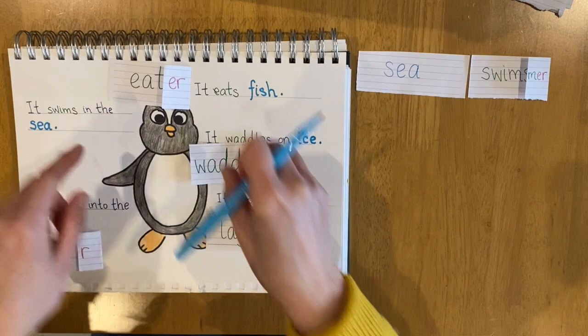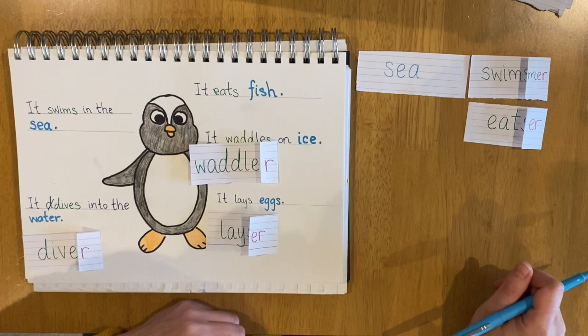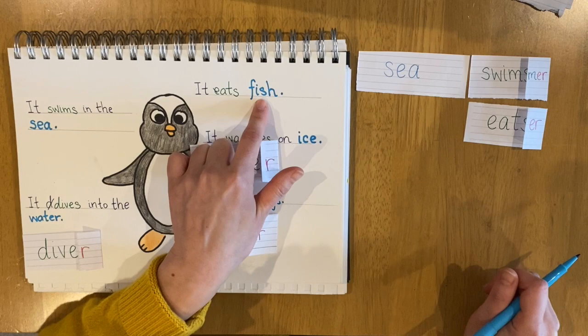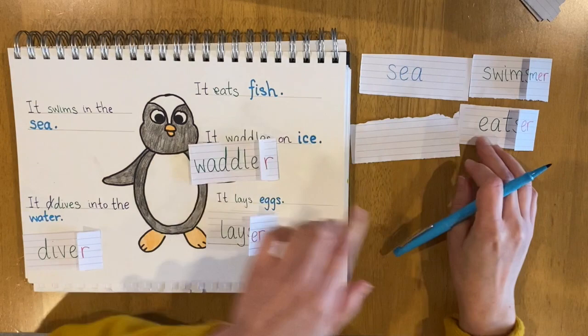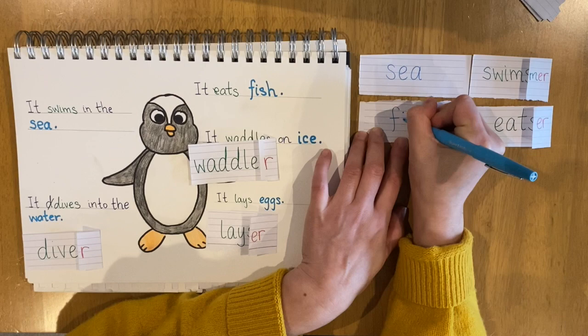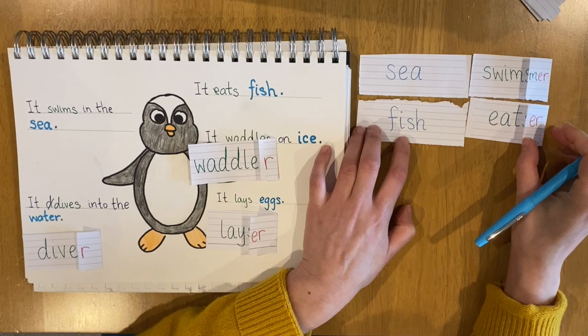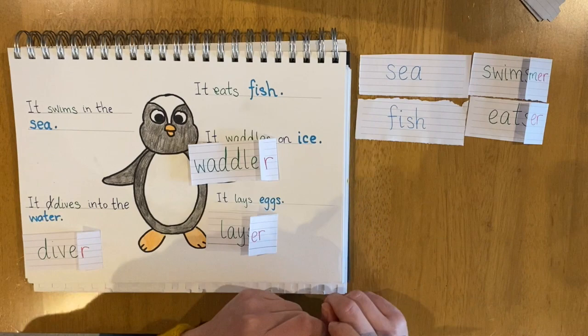Let's do eater. We're going to put eater on this side. What does it eat? It eats fish. Fish is our noun. So we get another strip of paper and we're going to copy the word fish. So far we have two lines of our kenning poem: sea swimmer, fish eater.